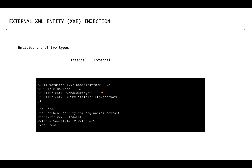When it comes to external entities, we use the keyword system and specify a URL from which the value of the entity should be loaded. In this example, we are defining an entity called ENT2 and the value of this entity is going to be the content of the /etc/passwd file, specified as a URL using the keyword system. Similarly, instead of using file as a scheme, we can also use other schemes like HTTP to load a file from a remote server — that's how external entities work.